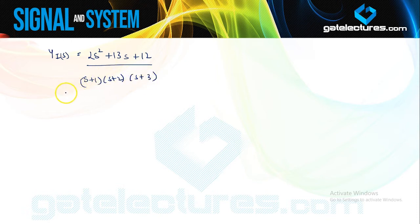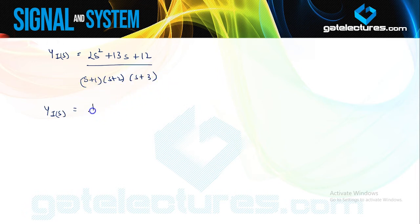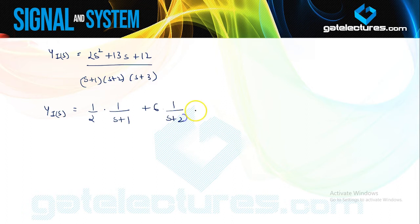We use partial fraction expansion. Writing the results directly, Y(s) equals (1/2)·[1/(s+1)] plus 6·[1/(s+2)] minus (9/2)·[1/(s+3)].